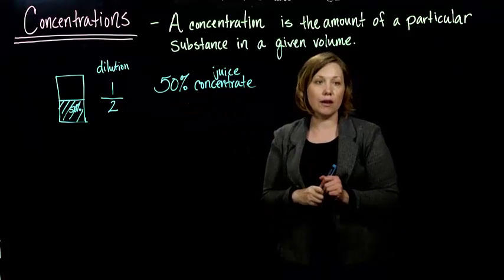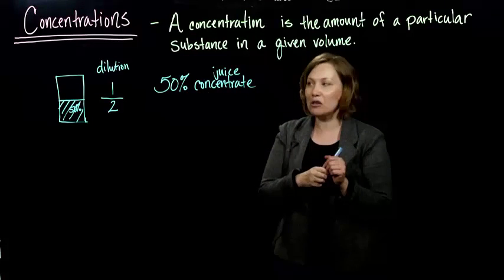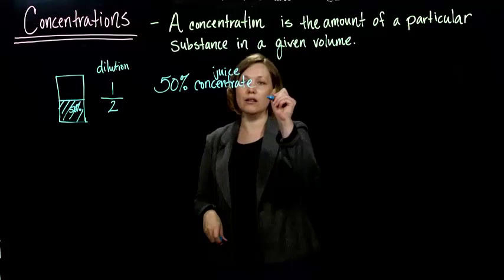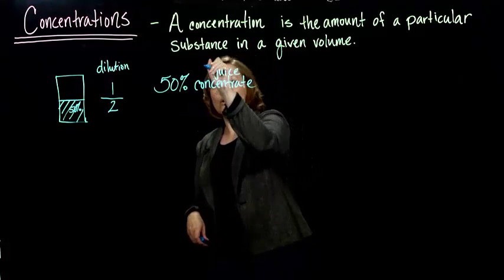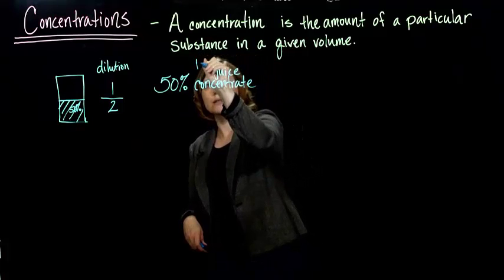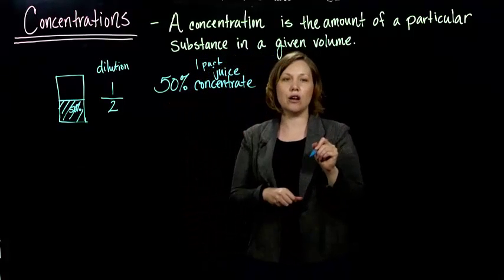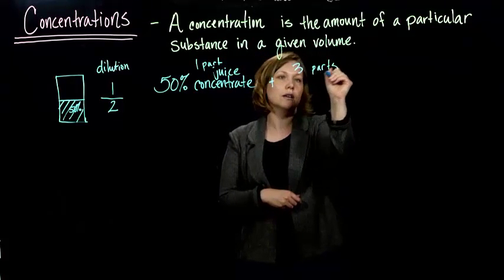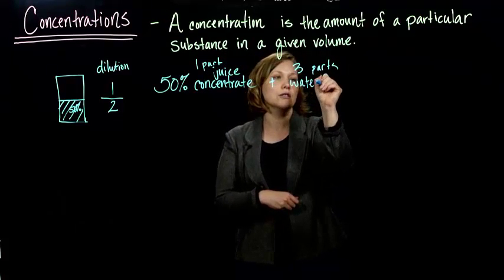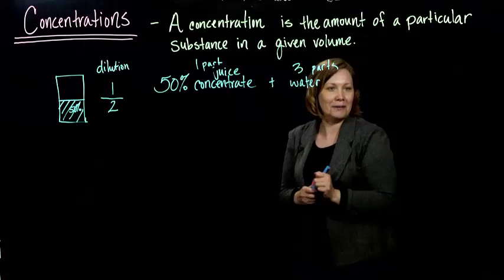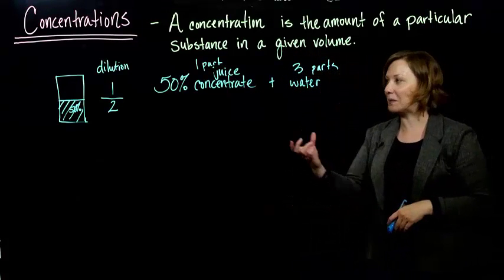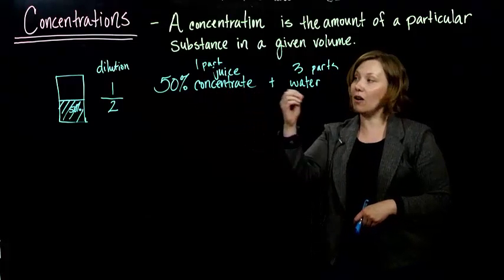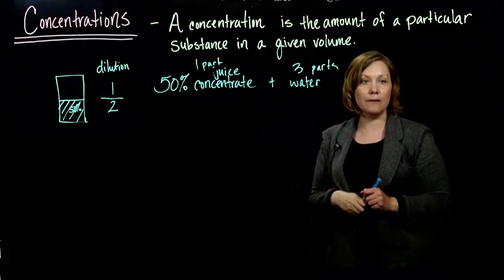If you look on the side of the package of juice, we mix one can of juice, one part of the 50% juice concentrate, plus three parts water. This is your solvent in this case. We usually don't talk about solvent in our food, but that's technically what we're doing. We're diluting our juice concentrate.